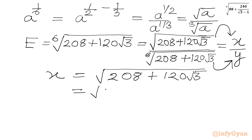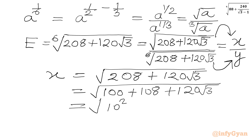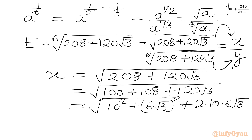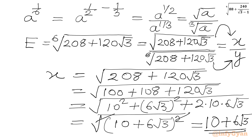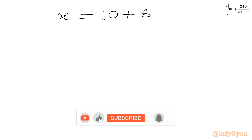We can split 208 as 100 + 108 + 120√3. Here 100 = 10², 108 = (6√3)², and 120√3 = 2 × 10 × 6√3. So inside the square root we have a² + b² + 2ab, which is (a + b)² — specifically (10 + 6√3)². Taking the square root gives x = 10 + 6√3.